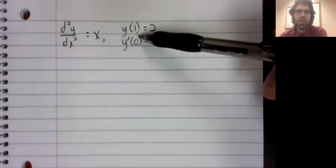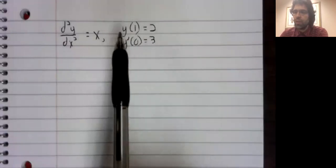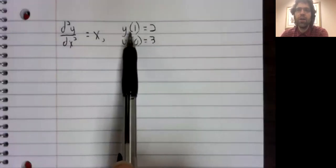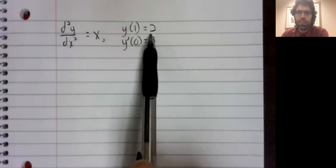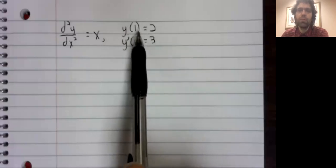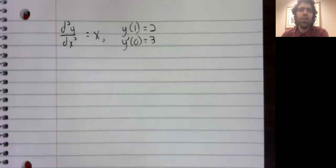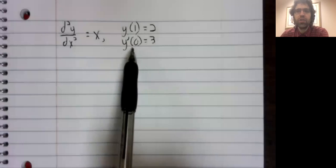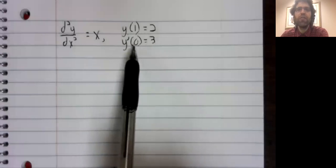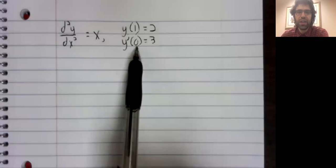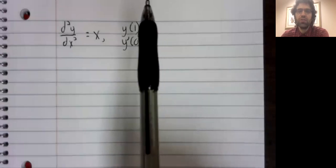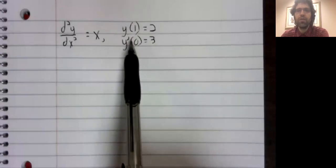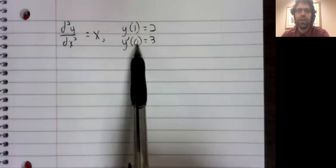And you now see what I meant. Instead of being told that y of 1 equals 2, and then being given another piece of information about y, y of 4 equals whatever, say, the other initial condition tells us what the first derivative is doing at a point. So we're given initial conditions for the function and for the lower order derivatives.